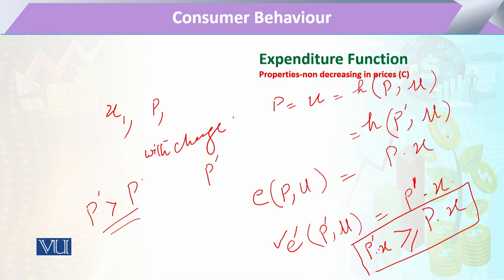Likewise agar yeh p prime doosri soorat-e-haal mein hum kahein ke p prime if less than p hai, to jo hamari yeh hi wala condition hai, to hum kahenge ke p prime x jo hai yeh greater ki bajaye yeh less hoke p dot x ho jayega.